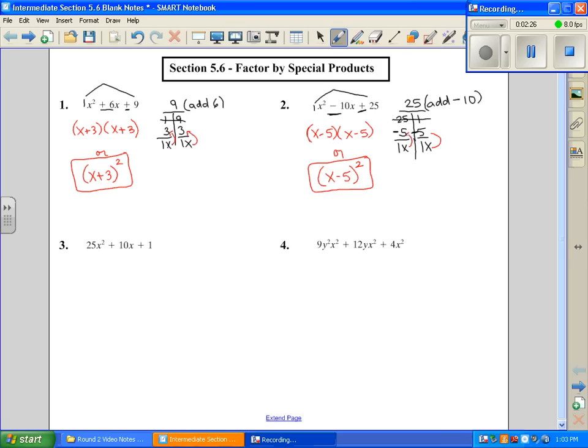Number 3, we check for GCF. There's no GCF. Nothing can come out of all three of these terms. So we're going to do our bottoms up method. What multiplies to give us 25, because that's a plus, is going to add to give us a positive 10 this time. Well, that's going to be 5 and 5.